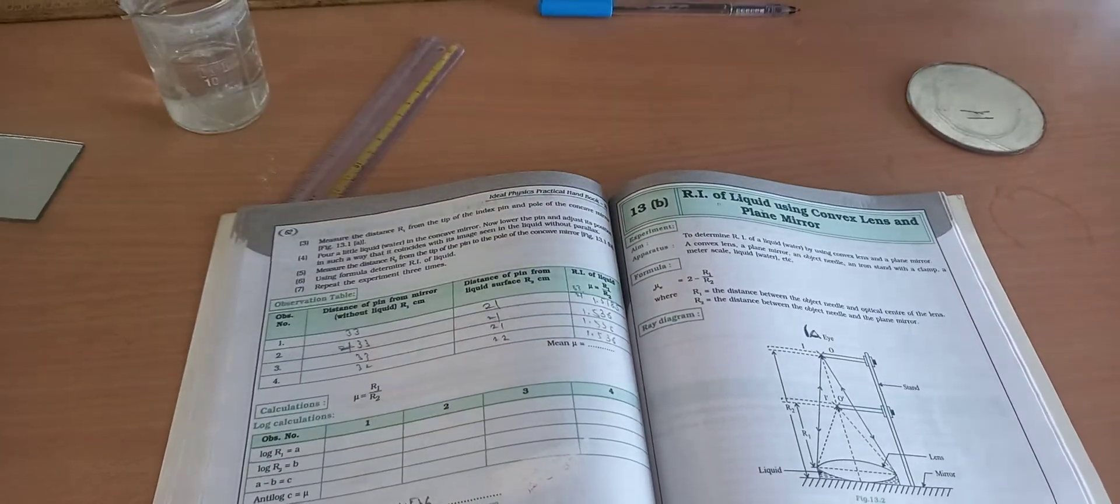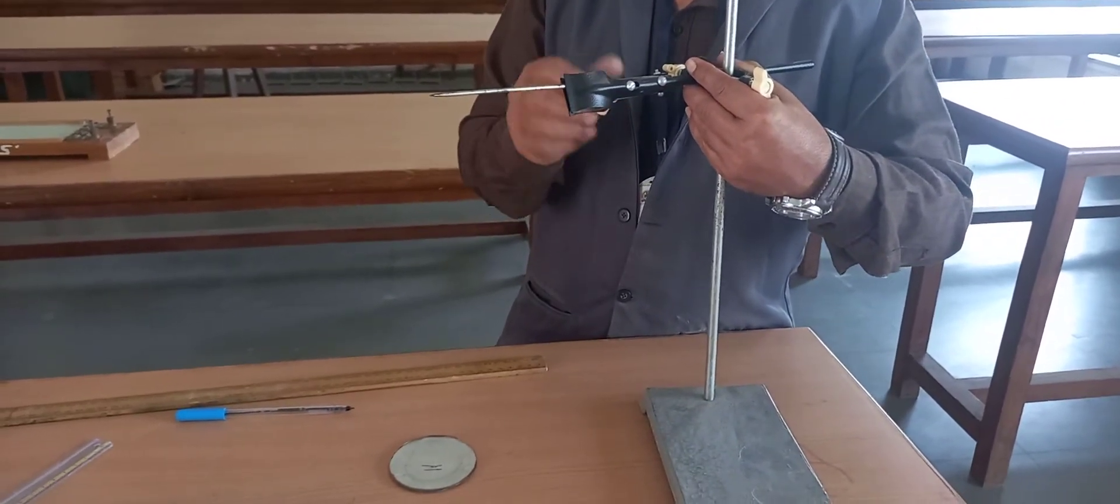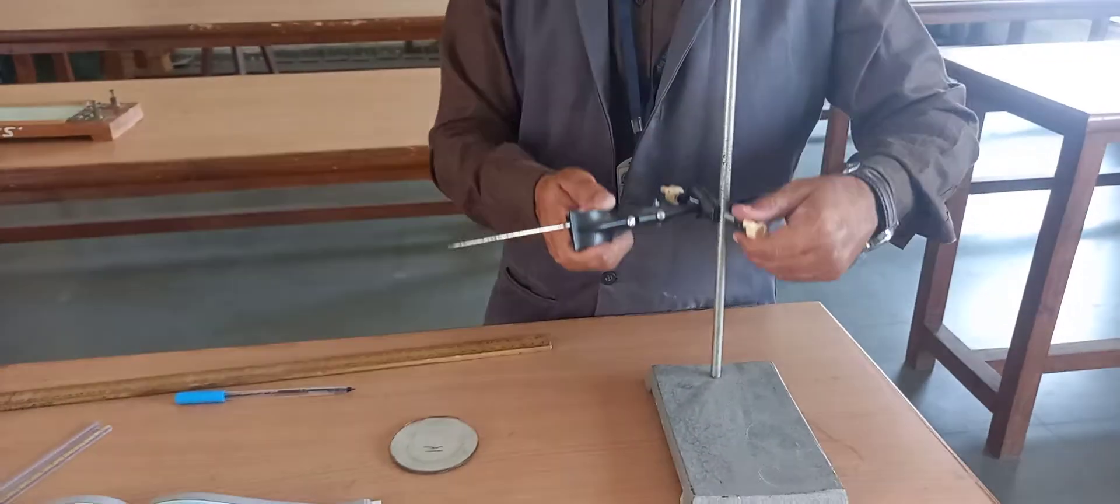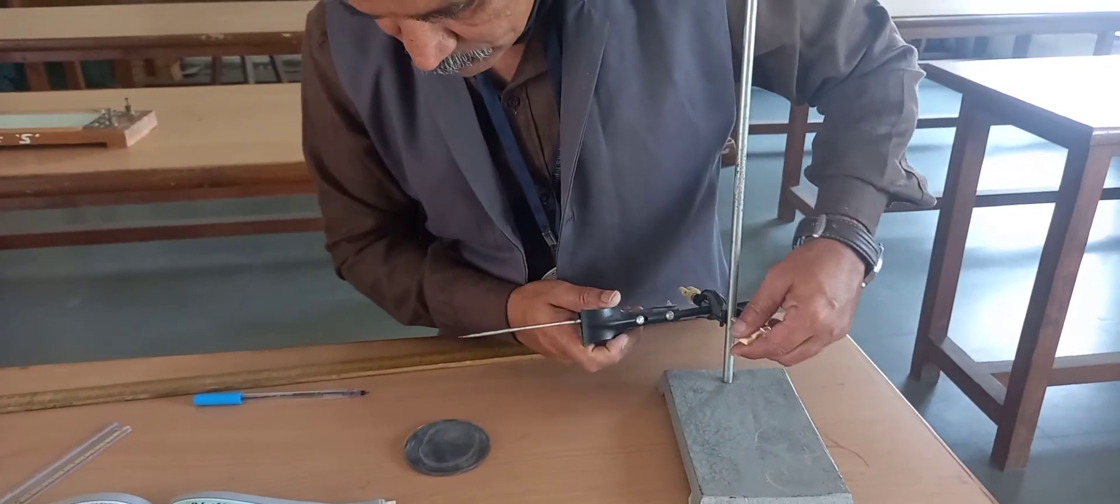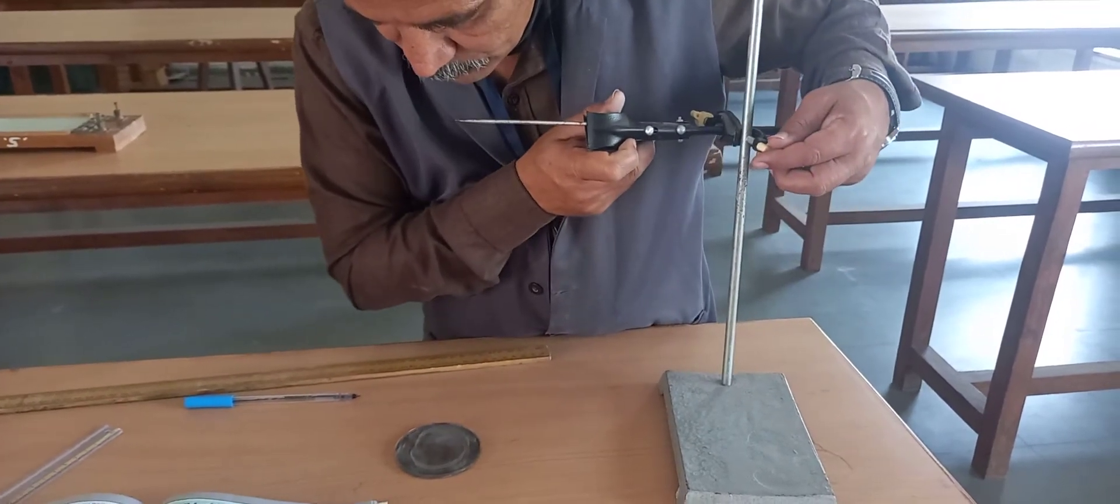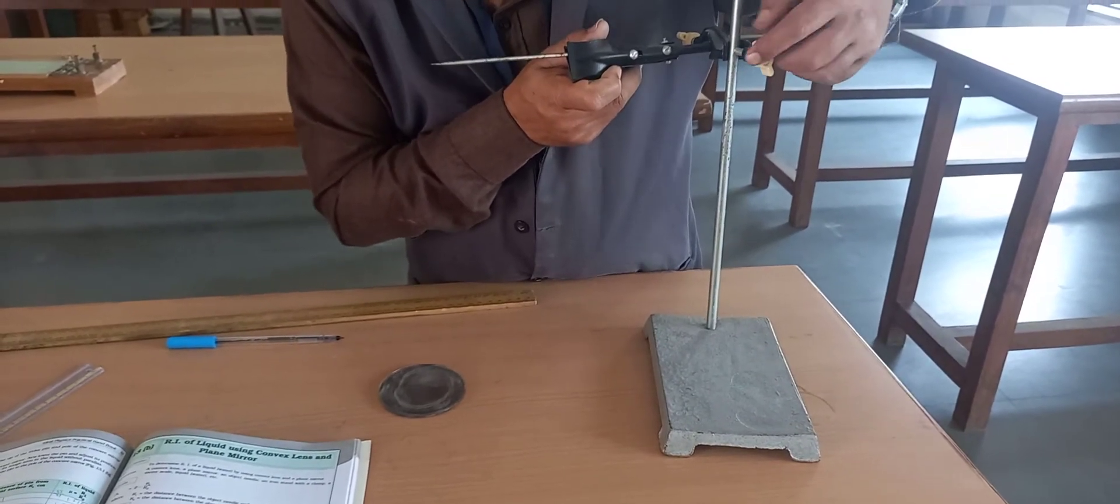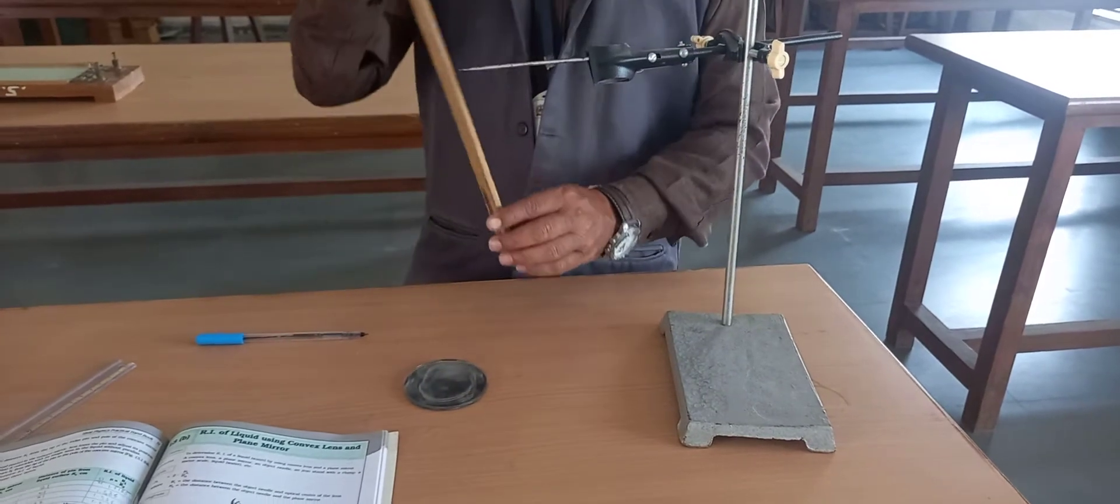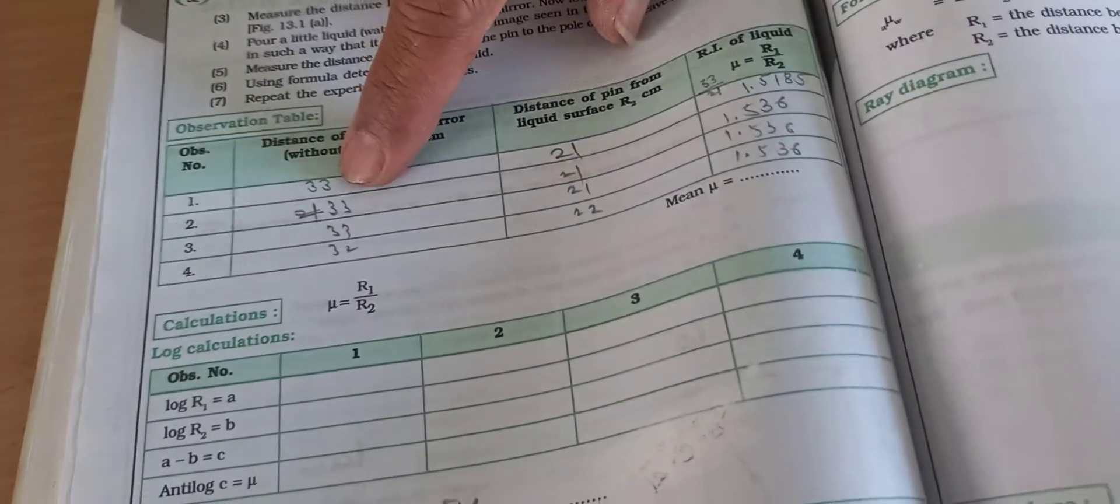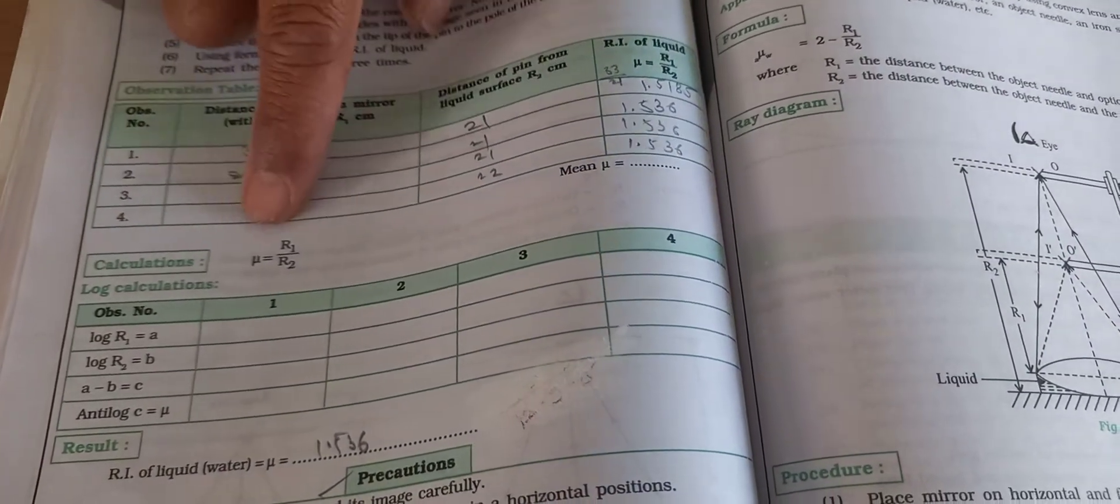Repeat this again. Lower the index pin and increase the height. At a typical height, we can see the sharp inverted image. Record this height - it is again 33 cm. Repeat this four times total: 33, 33, 33, 32. We have performed the experiment four times and got r1 values without liquid.